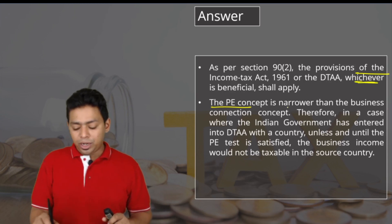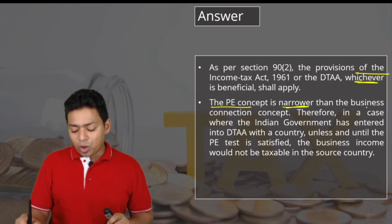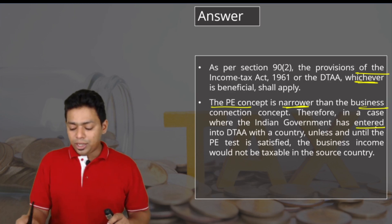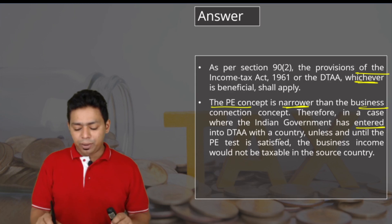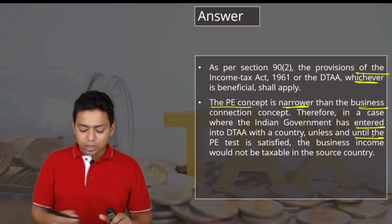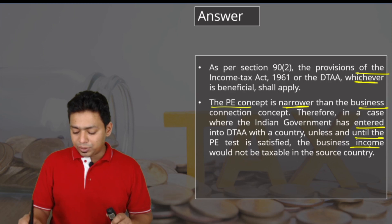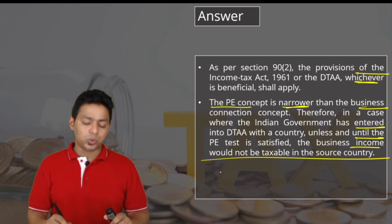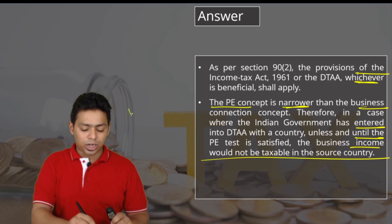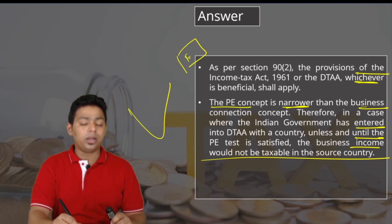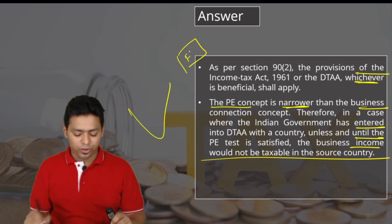The concept of permanent establishment is narrower than the business connection concept. Therefore, in cases where the Indian government has entered into a DTAA with another country, unless and until the PE test is satisfied, the business income would not be taxable in the source country — meaning India, since the residence country is the foreign country.